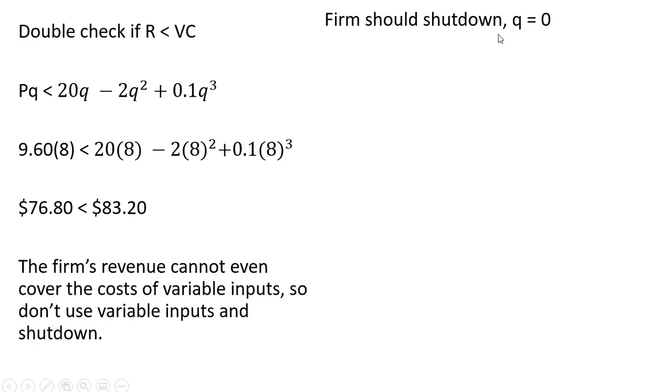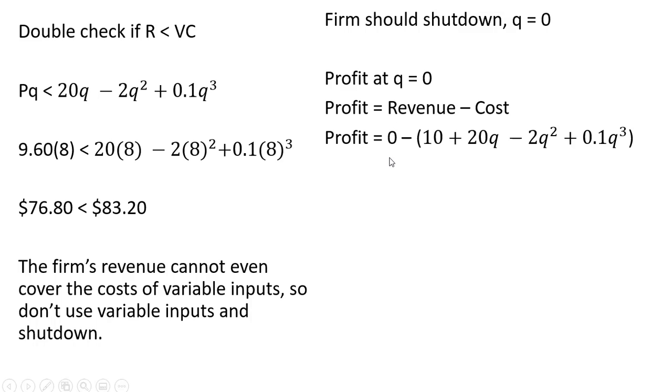If the firm shuts down, which it should do, q equals zero. Profit at q equals zero is as follows: profit is always revenue minus cost. Our revenue when you shut down is zero—you're not producing anything, you're not selling anything. Our cost, however, does not disappear. We will have fixed costs. All those terms get zeroed out except the fixed cost, so the firm's loss is minus $10, which represents fixed cost. When the firm shuts down, its profit will equal minus its fixed cost.